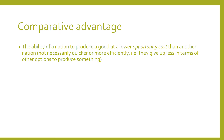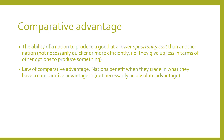Comparative advantage is a little bit more complex. This is the ability of a nation or person to produce a good at a lower opportunity cost than another nation. This doesn't mean that they produce something necessarily quicker or more efficiently — it just means that they give up less in terms of other options. The law of comparative advantage, which economists have realized governs international trade, states that nations benefit when they trade in what they have a comparative advantage in, not necessarily an absolute advantage. For centuries they thought nations would only trade in what they had an absolute advantage in, so nations without absolute advantages simply wouldn't trade. But that's not true — comparative advantage is what really governs whether nations benefit from trade.